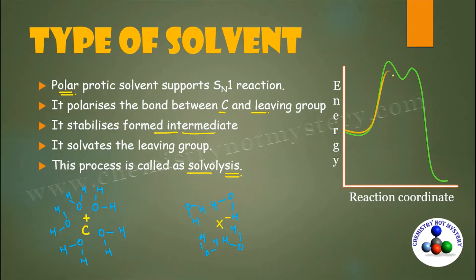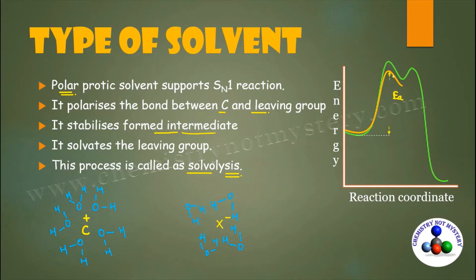When comparing the energy profile diagram for SN1 in the absence versus presence of polar protic solvent: the green graph represents SN1 without polar protic solvent, and the orange curve represents SN1 with polar protic solvent. Because the solvent stabilizes the carbocation, it lowers the activation energy, which is why polar protic solvents support SN1 reaction.